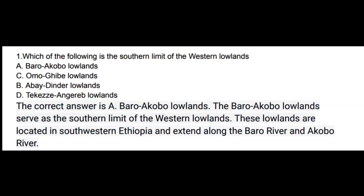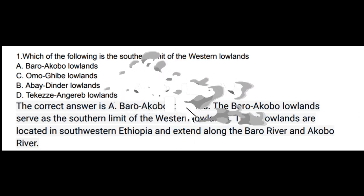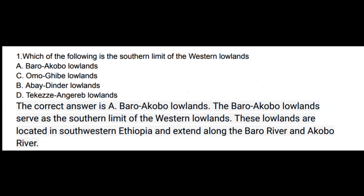Question 1: Which of the following is the southern limit of the western lowlands? Options: Baroakobo Lowlands, Omogybe Lowlands, Abadinder Lowlands, Tekazangareb Lowlands. The correct answer is Baroakobo Lowlands. The Baroakobo Lowlands serve as the southern limit of the western lowlands. These lowlands are located in southwestern Ethiopia and extend along the Baro River and Okobo River.